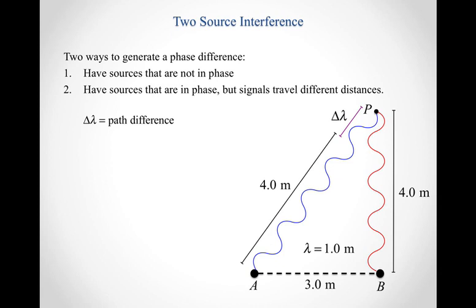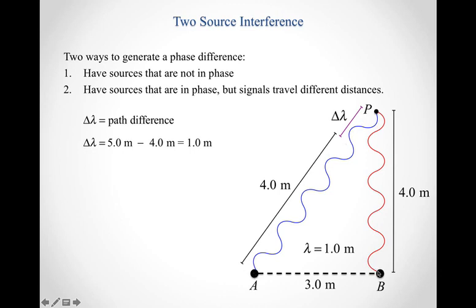Delta lambda is the symbol we use to denote the path difference — how much farther does one wave travel than the other? In this case, since the total distance from source A to point P is five meters and the distance the wave travels from source B is four meters, the path difference is five meters minus four meters, which is one meter. So the wave coming from source A has to travel one meter more than the wave coming from source B.